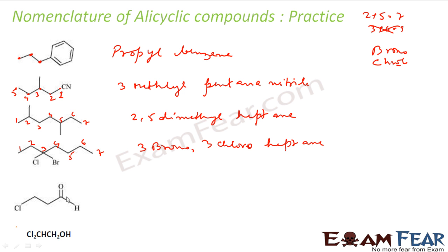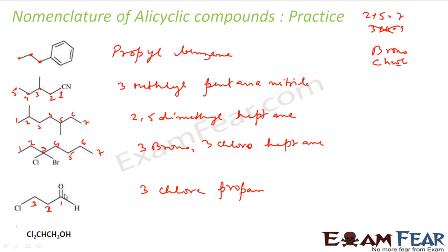Let's take this example. We have a CHO group — that is my functional group — so it will get priority and be numbered one. We have one, two, three carbons. At position three we have chloro as the prefix, three carbons means prop-, all single bonds, and this is an aldehyde, so: 3-chloropropanal.